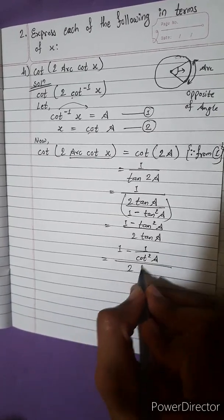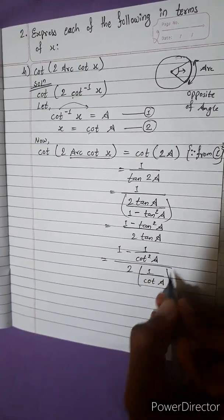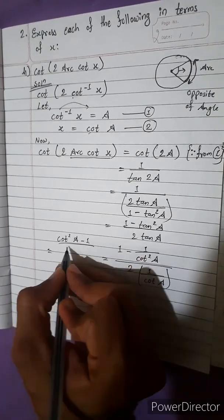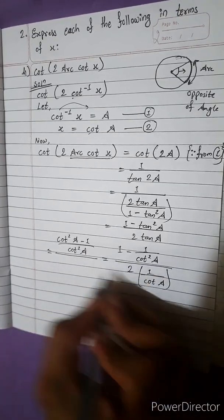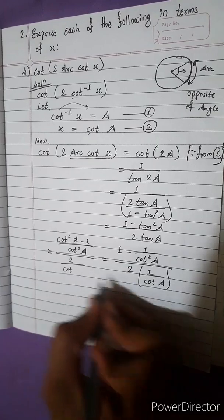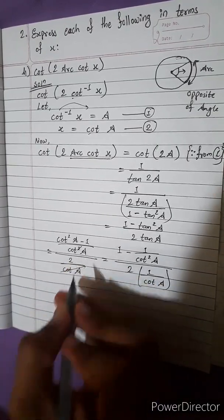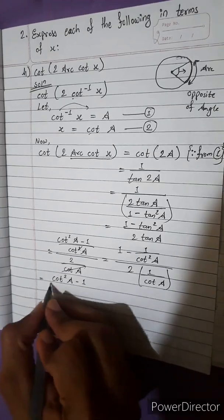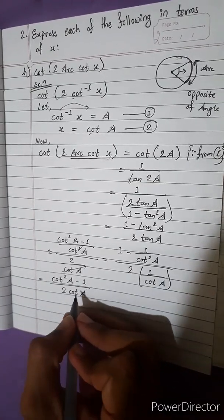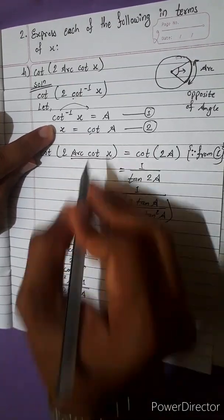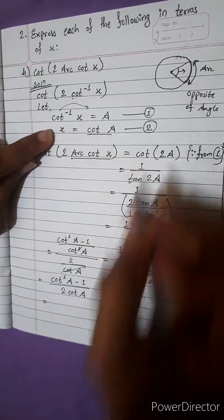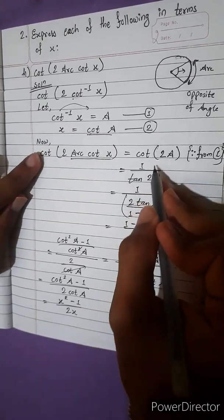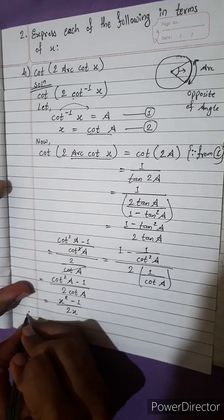This is the formula. Now let's convert: 1 minus 1 by cot squared a, divided by 2 into 1 by cot a. We can write this as cot squared a minus 1 upon cot squared a, divided by 2 by cot a. Simplifying, cot a and 1 cancel, giving cot squared a minus 1 by 2 cot a. Now cot a equals x from equation 2, so the answer is x squared minus 1 by 2x. Therefore, cot 2 arc cot x equals x squared minus 1 upon 2x.